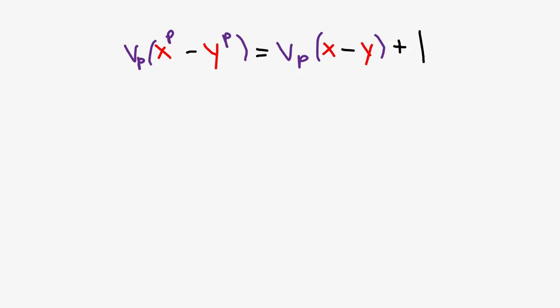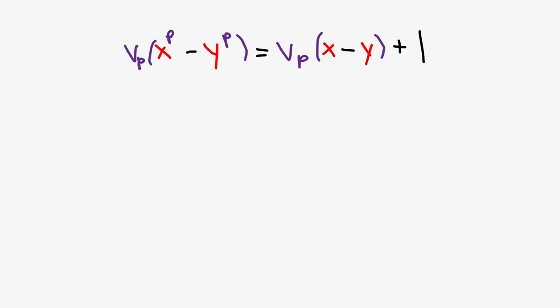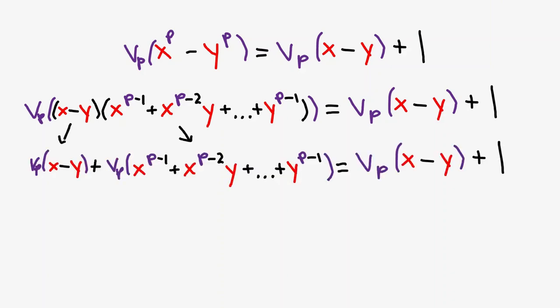Similar to before, we can factor out x minus y from x to the p minus y to the p, giving us this. Notice that v sub p of the product of two numbers is equivalent to v sub p of each number added together, which allows us to simplify even further. We can then remove v sub p of x minus y from both sides, giving us the following. This equation basically states that there is exactly one factor of p in this expression. We just need to prove it is true.